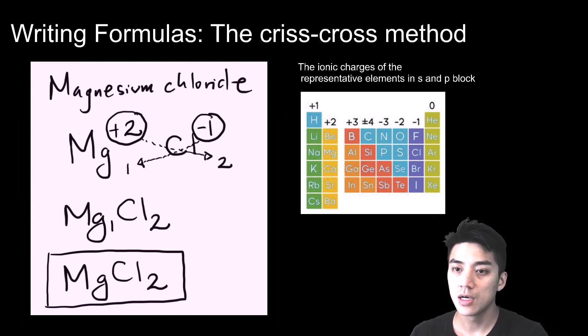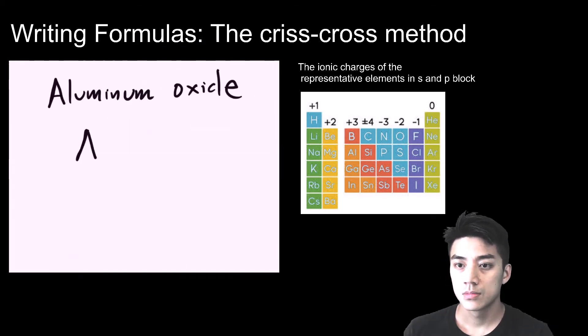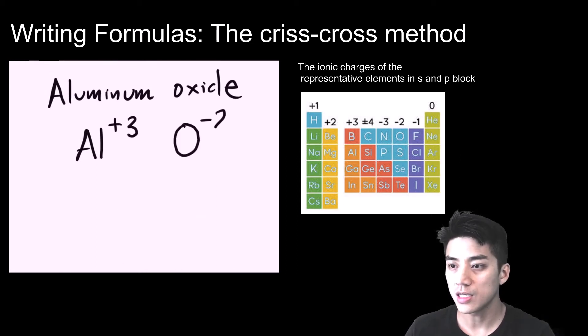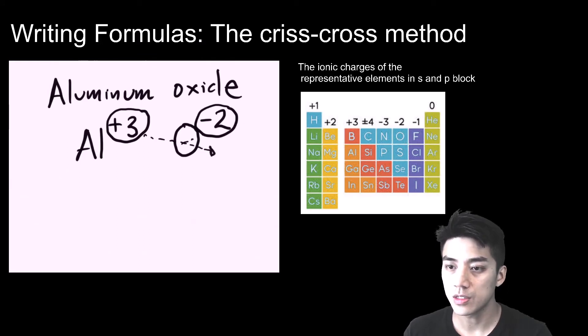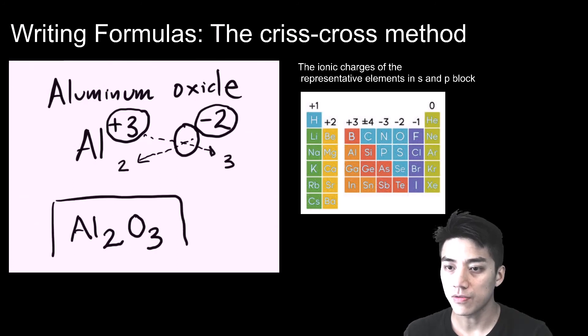Aluminum oxide: Al has a plus three charge. Oxygen has a negative two charge, look at where it's at in the columns. I'm going to circle both of the charges and criss-cross them like how I've been doing this whole time. So I will rewrite this as Al2O3. Let's clean it up a bit, Al2O3 no gaps in between and that is how you write the formula for aluminum oxide.